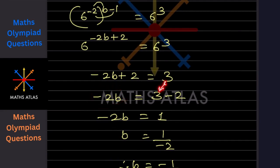We will take minus 2b on one side. Plus 2 will become minus 2 if it goes to the other side. 3 minus 2 is 1. This is multiplication, so it is going to get divided.